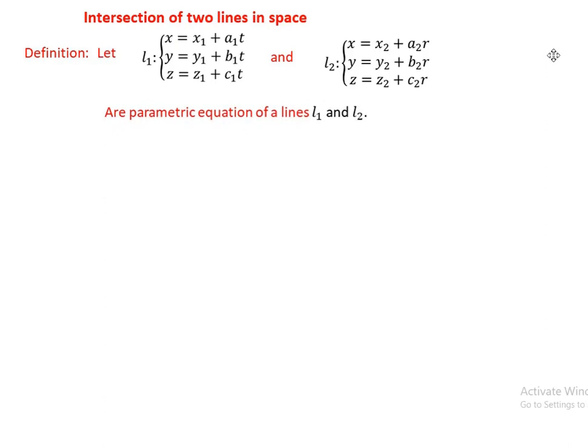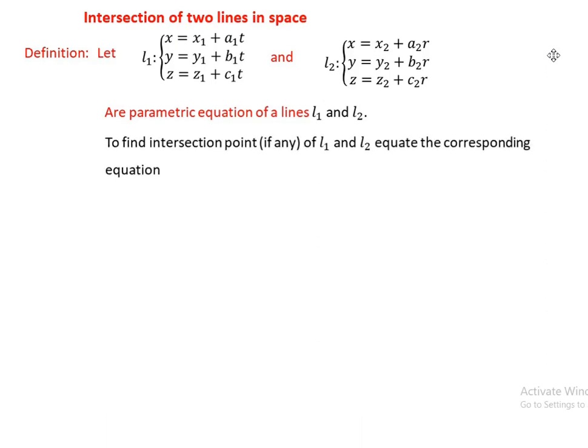These are called the parametric equations of lines L1 and L2. L1 uses parameter t and L2 uses parameter r. To find the intersection point of L1 and L2, if an intersection exists, we equate the corresponding equations.